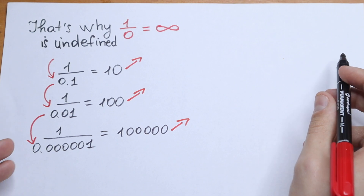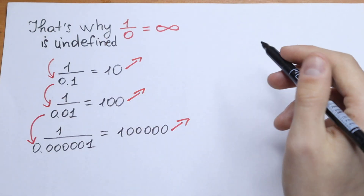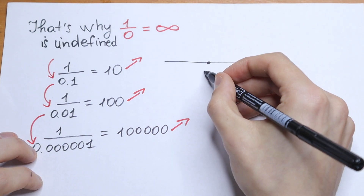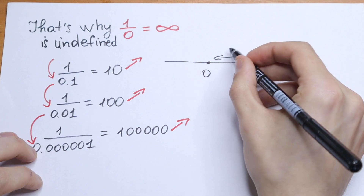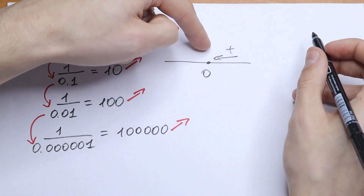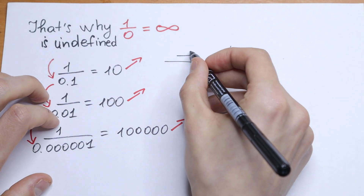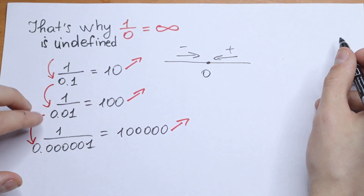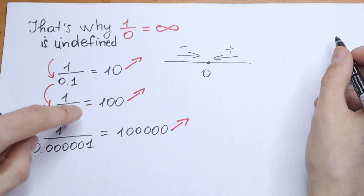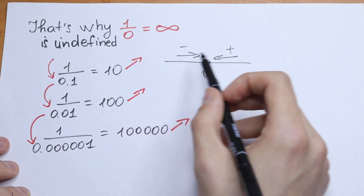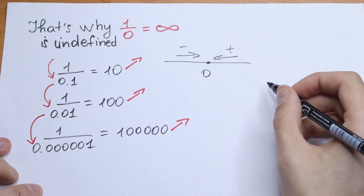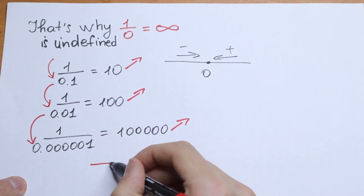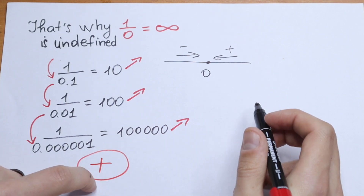So what are we going to do in this case? We can go to 0 from two directions — from plus infinity, from positive numbers, and from the negative side. As you can see, this number can be really different. So this is our plus case — we go from positive numbers.